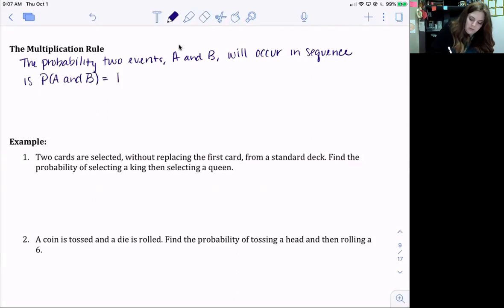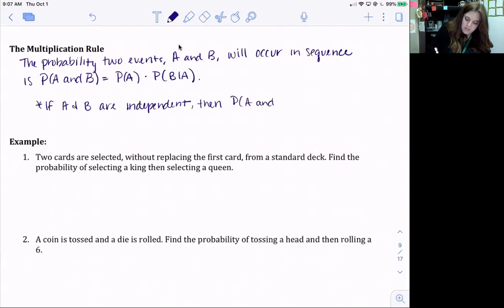Okay, but we just talked about independent and dependent events. So if A and B are independent, then we can rewrite this as the probability of A and B equals the probability of A times the probability of B.